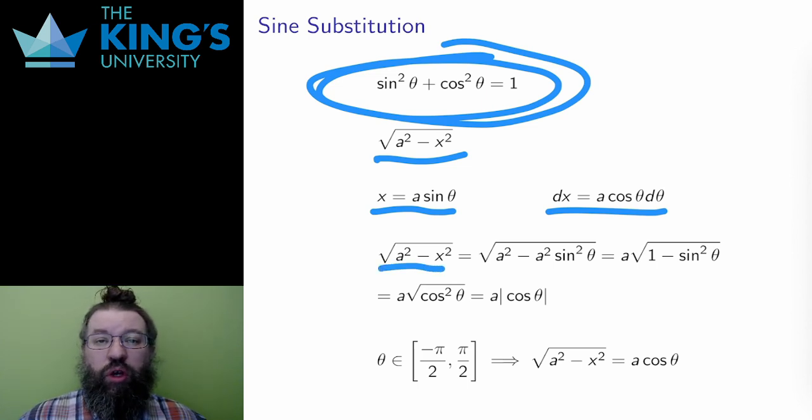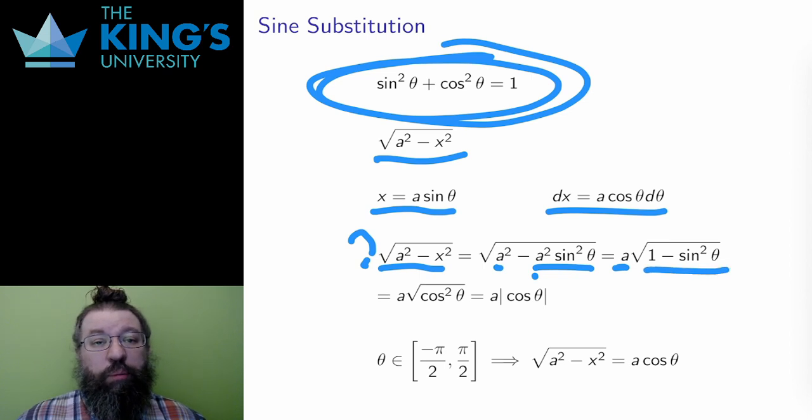If I use the substitution, what happens to the square root term? Well, I will replace x squared with a squared sine squared theta, and then I can factor a squared out and pull it out of the square root. I can always assume a squared is positive in these problems. Then one minus sine squared theta is cosine squared theta, using the trig identity I just mentioned.